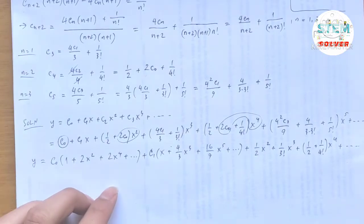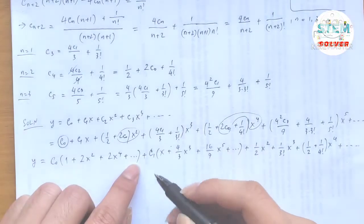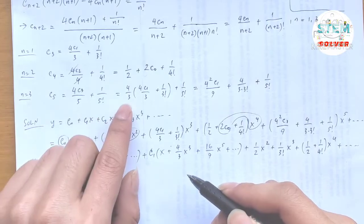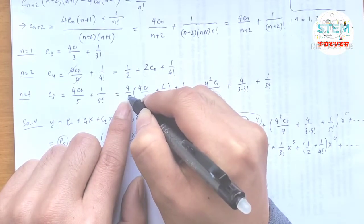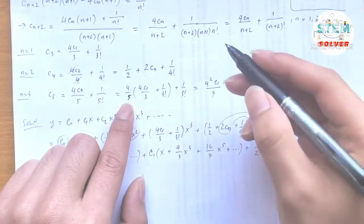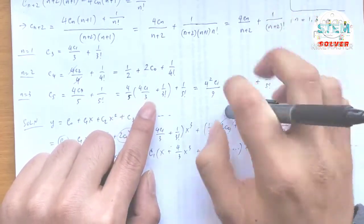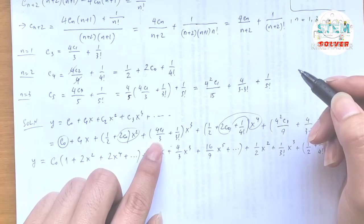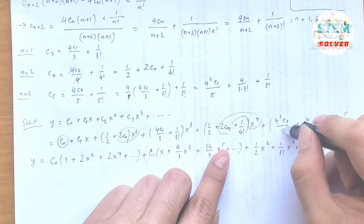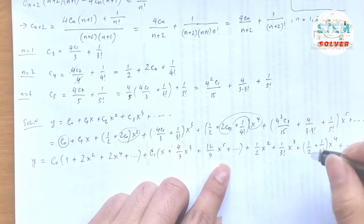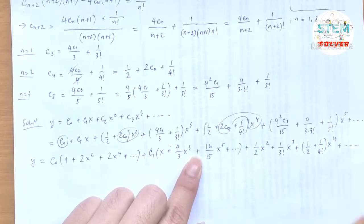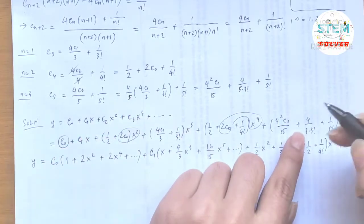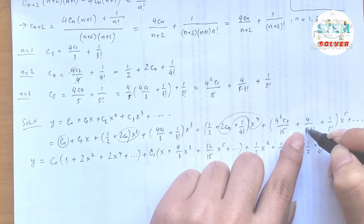Wait, there's a small mistake. Looking back at c₅: the coefficient should be 4/5 times c₃, not 4/3. So the c₁ coefficient for the x⁵ term should be 16/15, not 16/9. Also the denominator in the middle term of c₅ should be 5 times 3 factorial, i.e., 5 · 3! = 15. Correcting: that term is 16c₁/15 and the other coefficient is 4/(5 · 3!). The rest of the algebra stands.